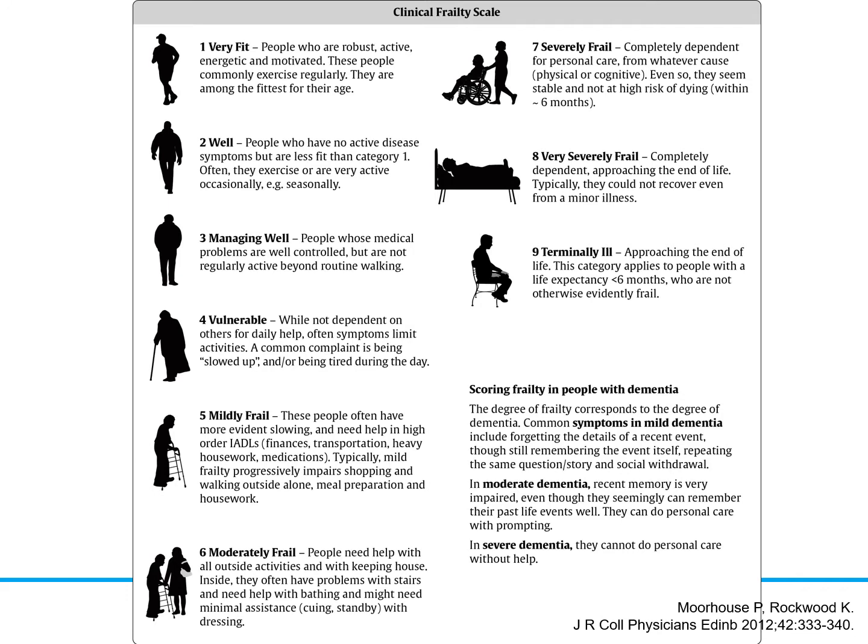The scale is from 1 to 9. People in the 4 to 5 category are moderately frail and have impairments in at least one instrumental activity of daily living — such as cooking, cleaning, shopping, driving, and paying bills. Patients from 6 to 8 are more severely frail and have impairments in basic activities of daily living such as bathing, dressing, toileting, and feeding. Patients rated 9 are essentially terminally ill.